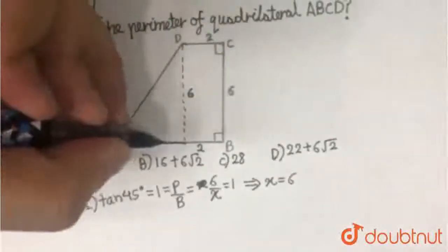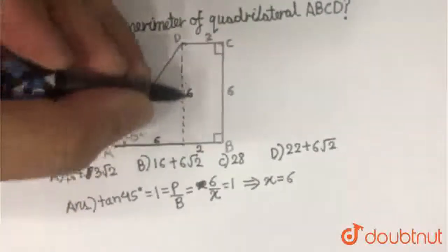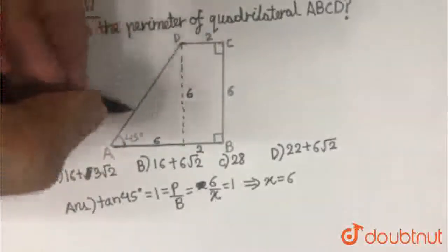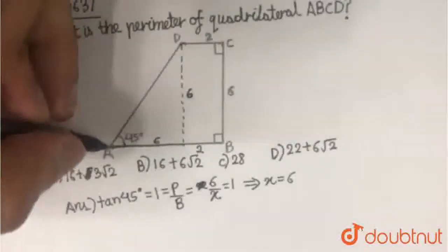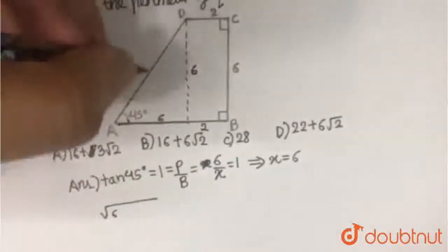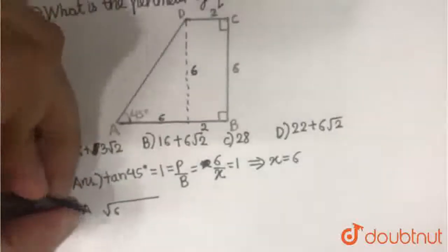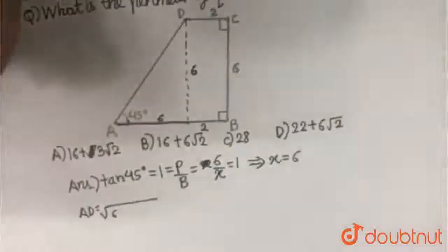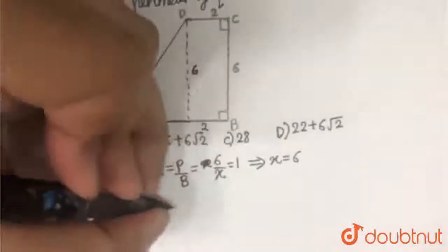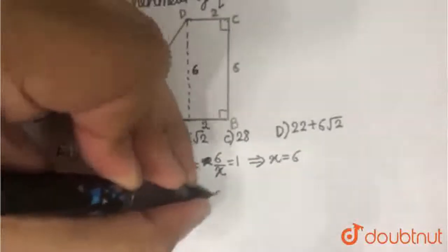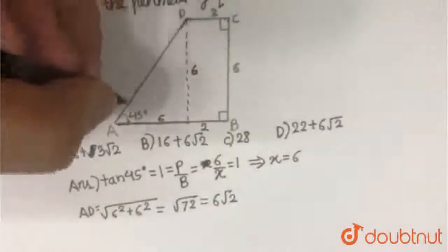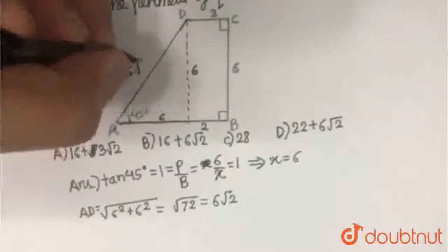Now, this is also 6 and this is also 6. To find out this side, we just use the basic Pythagorean theorem. Let us say it to be AD. So AD becomes equal to root over 6 square plus 6 square, which is equal to root over 72, which is equal to 6 root 2. So this side becomes 6 root 2.